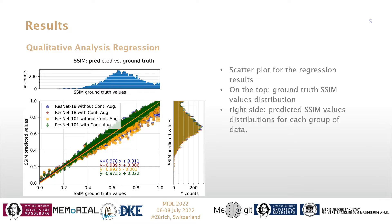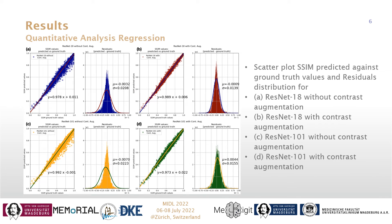To understand these results better, we now have the individual scatter plots for each model, along with the plots showing their residuals, which are the deviations of the predicted values from the ground truth. Here it is clear that the ResNet-18 with contrast augmentation performed the best, and ResNet-101 without contrast augmentation performed the worst. These plots reconfirm our finding that the models with contrast augmentation perform better than the models without.